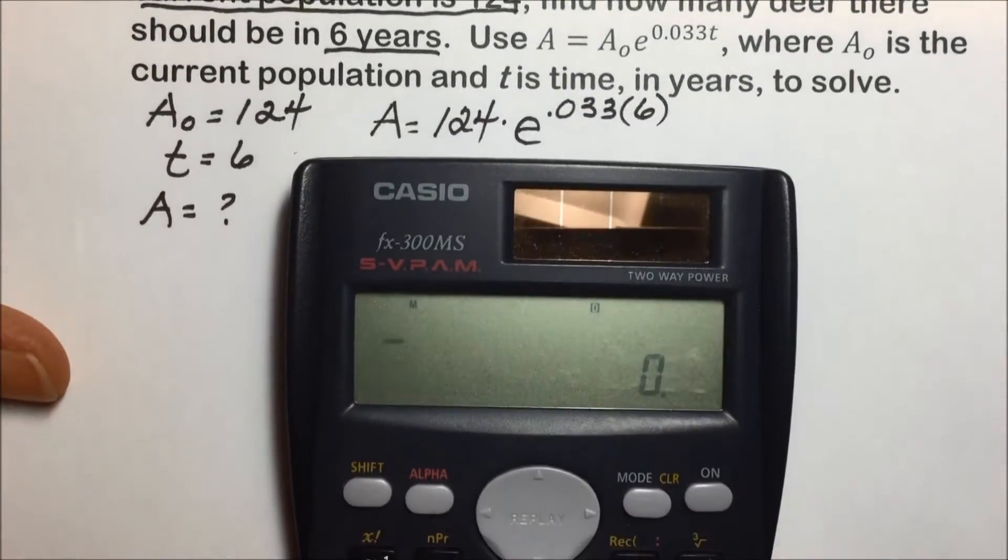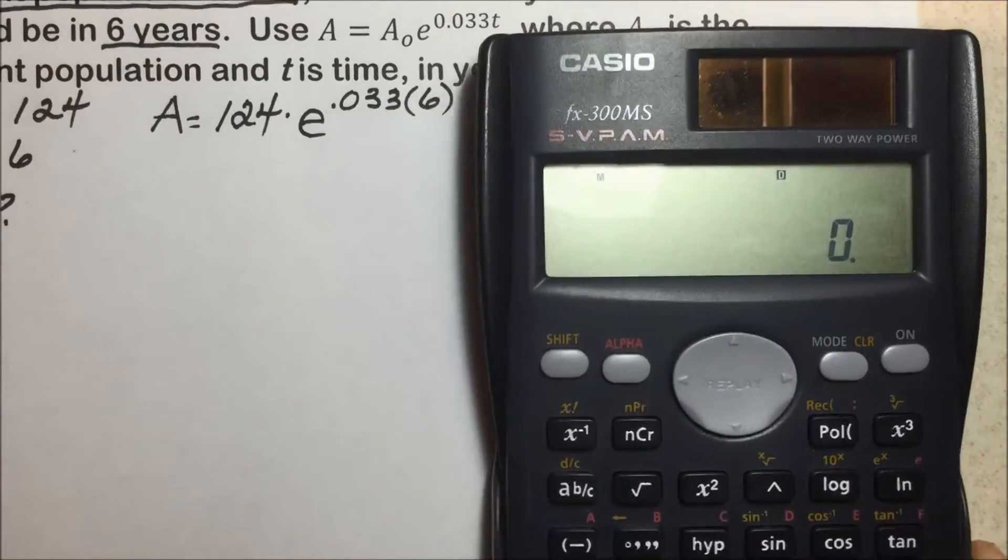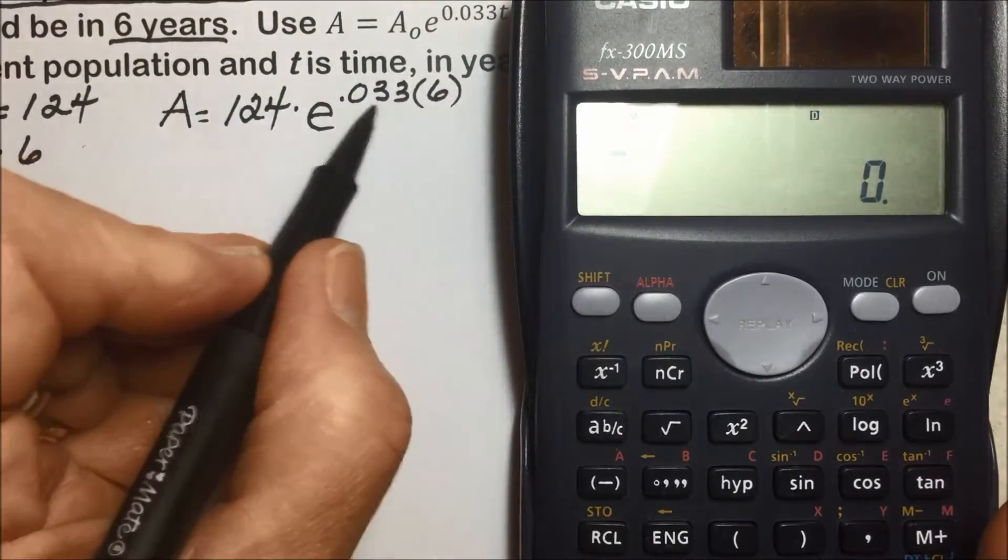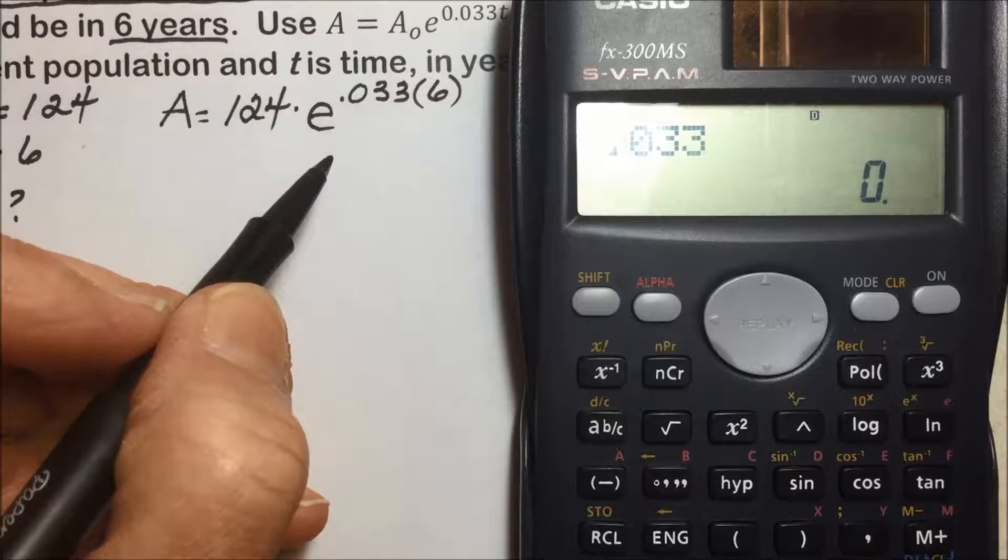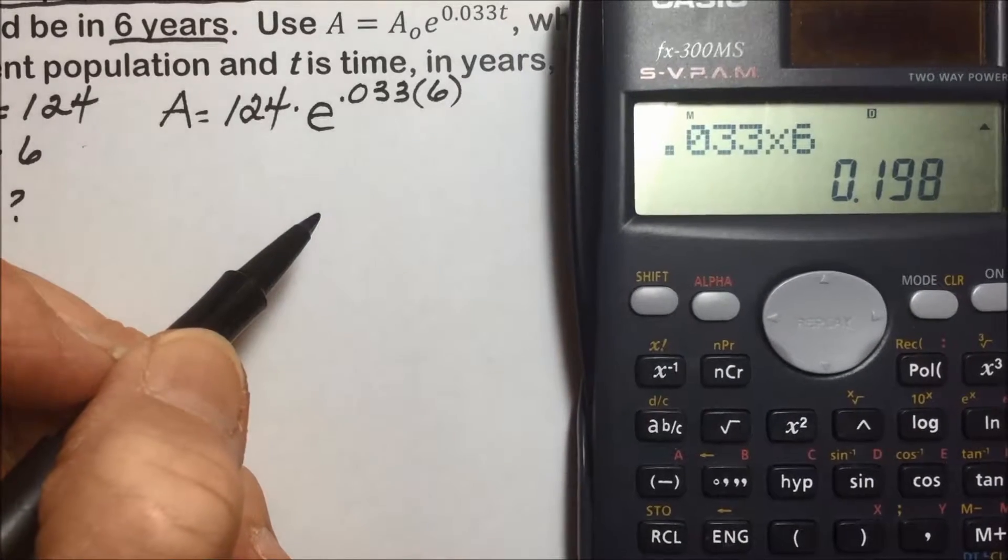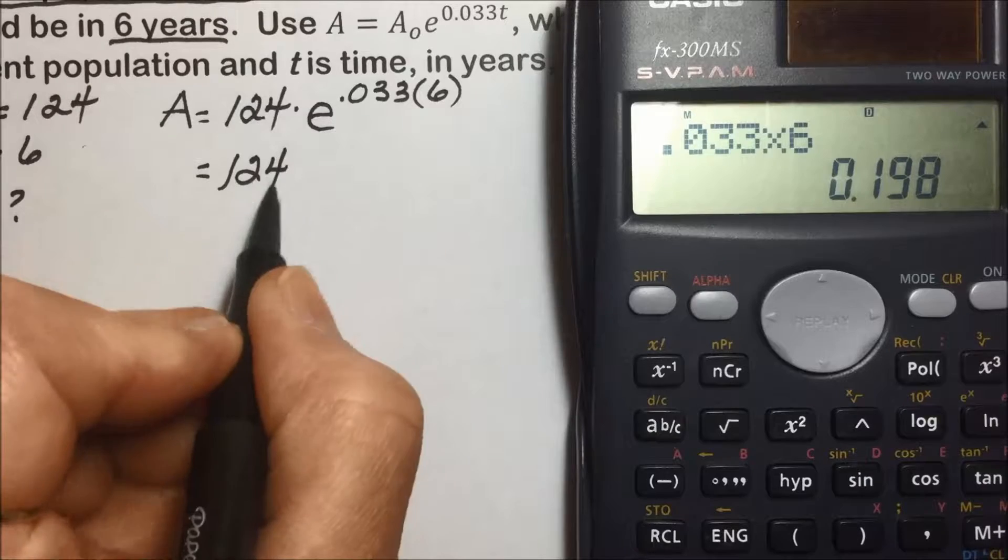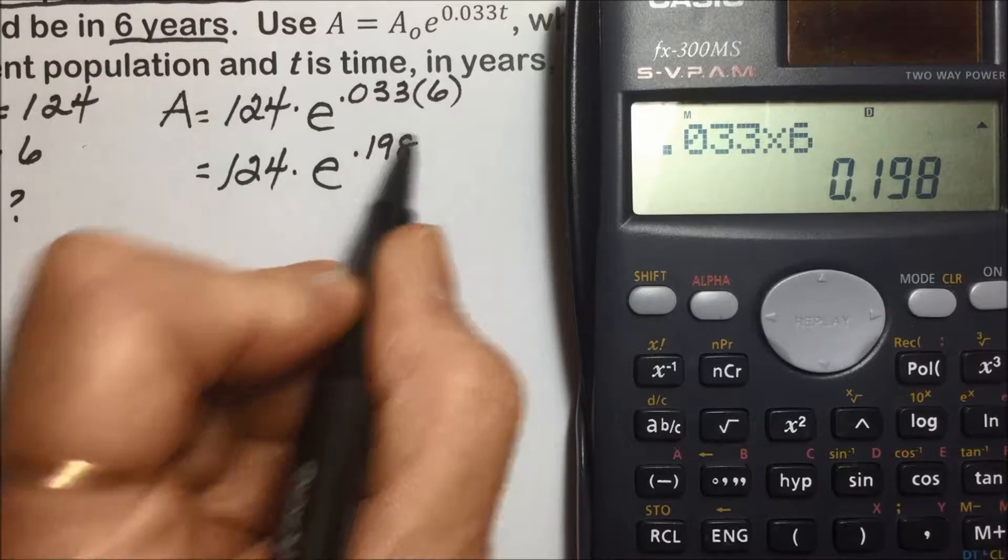Simplifying this expression to find our answer, we can take a scientific calculator. Let me slide this over so you can see the keys. First, I'm going to simplify the exponent, 0.033 times 6 results in a value of 0.198.